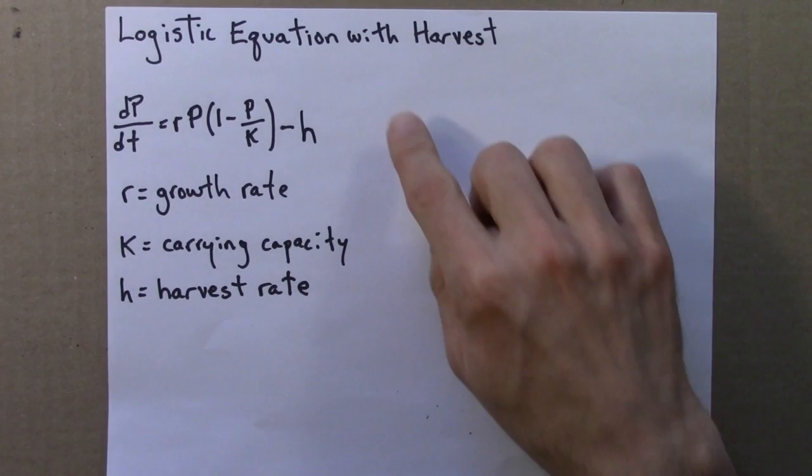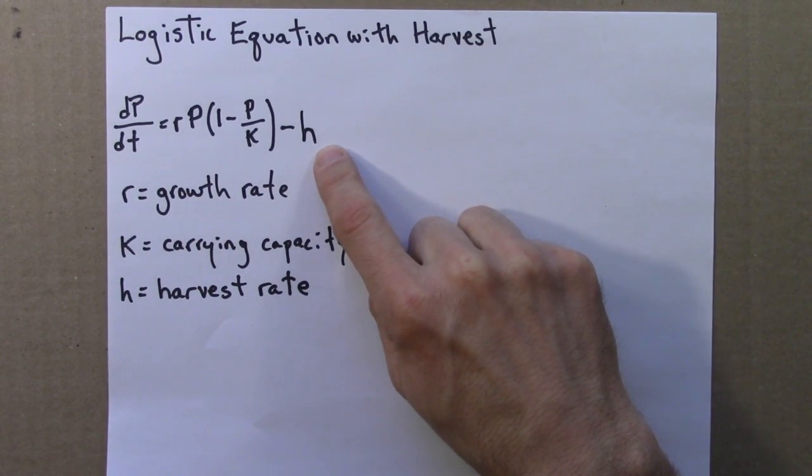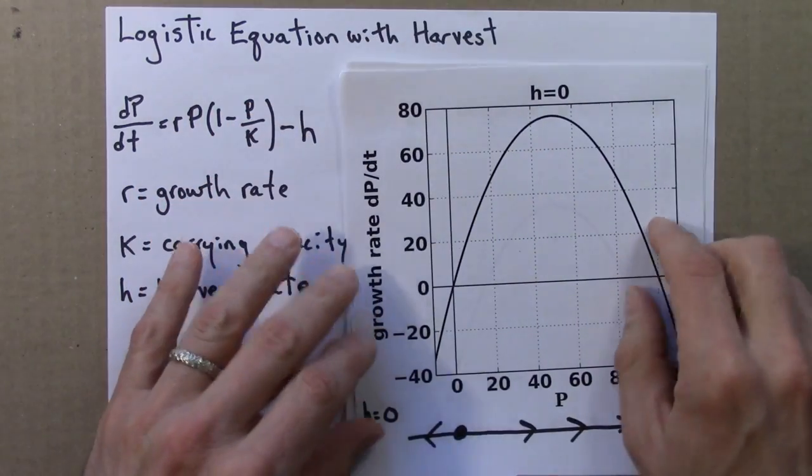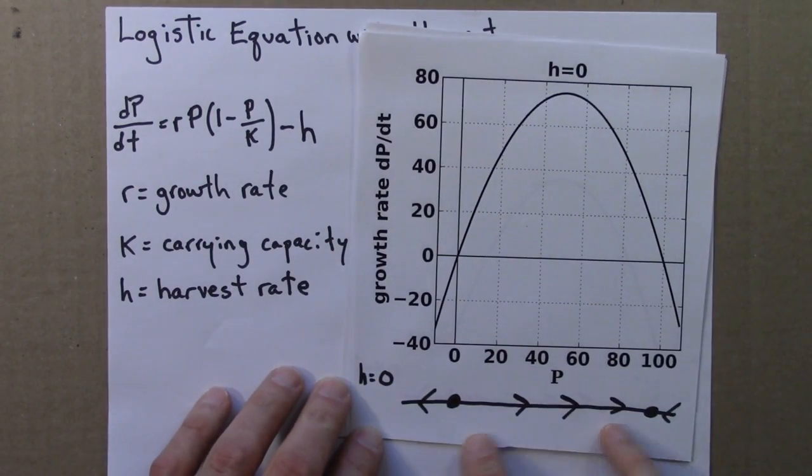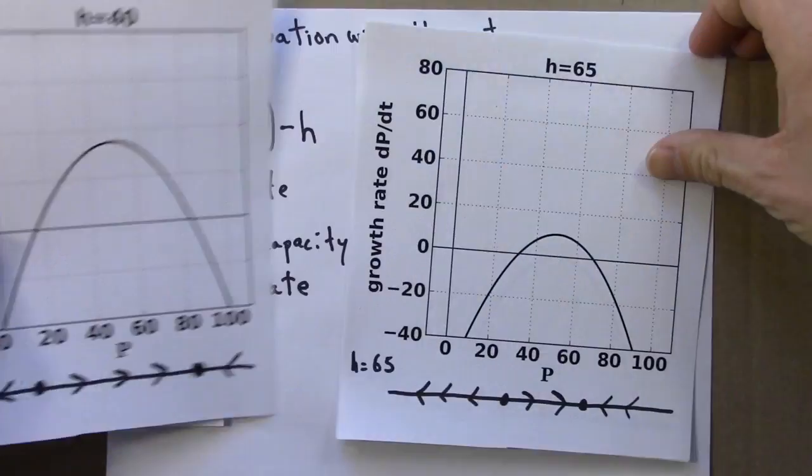In the last video, we analyzed the logistic equation with harvest for different values of h. The fruits of our labor was a bunch of phase lines. So we looked at different h's, here's h=0, 40, 65, and for each one we used this graph to make a phase line.